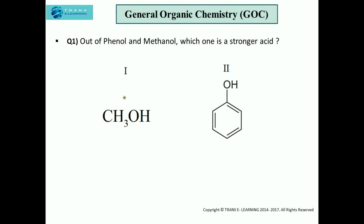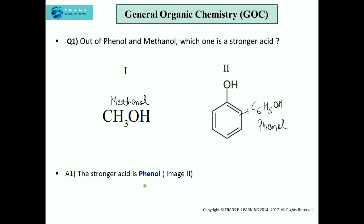Here you can see I have written two structures. The first one, that is CH3OH, is methanol, whereas this one, that is C6H5OH, is phenol. So, out of phenol and methanol, the stronger acid is phenol. Why? What is the reason behind it? What justification can we give for this answer? Let's study about that in this video.